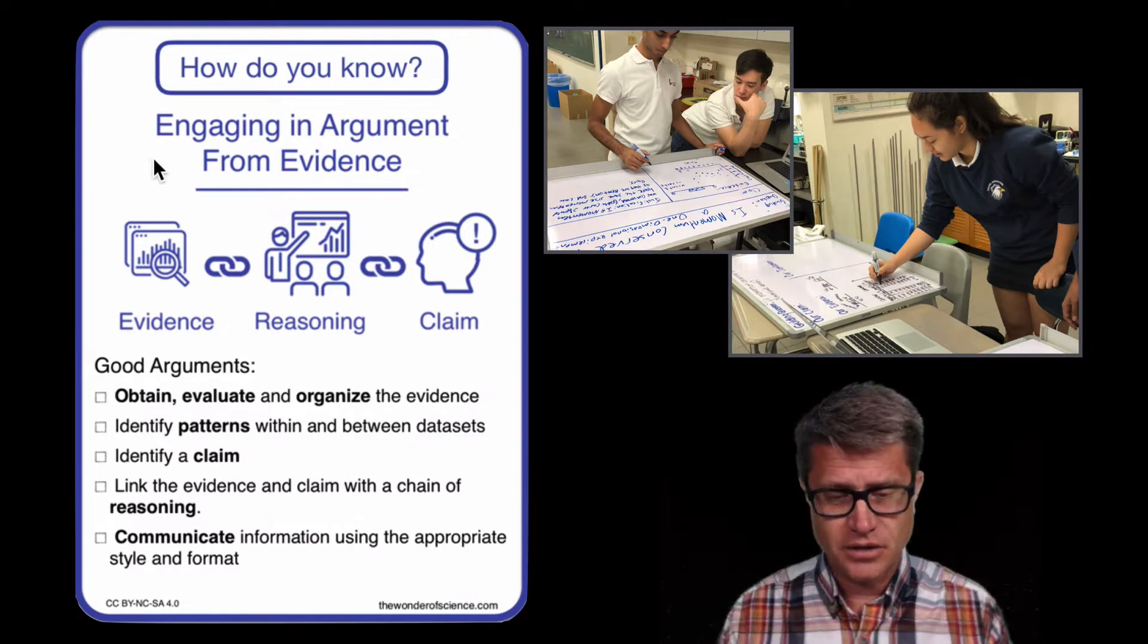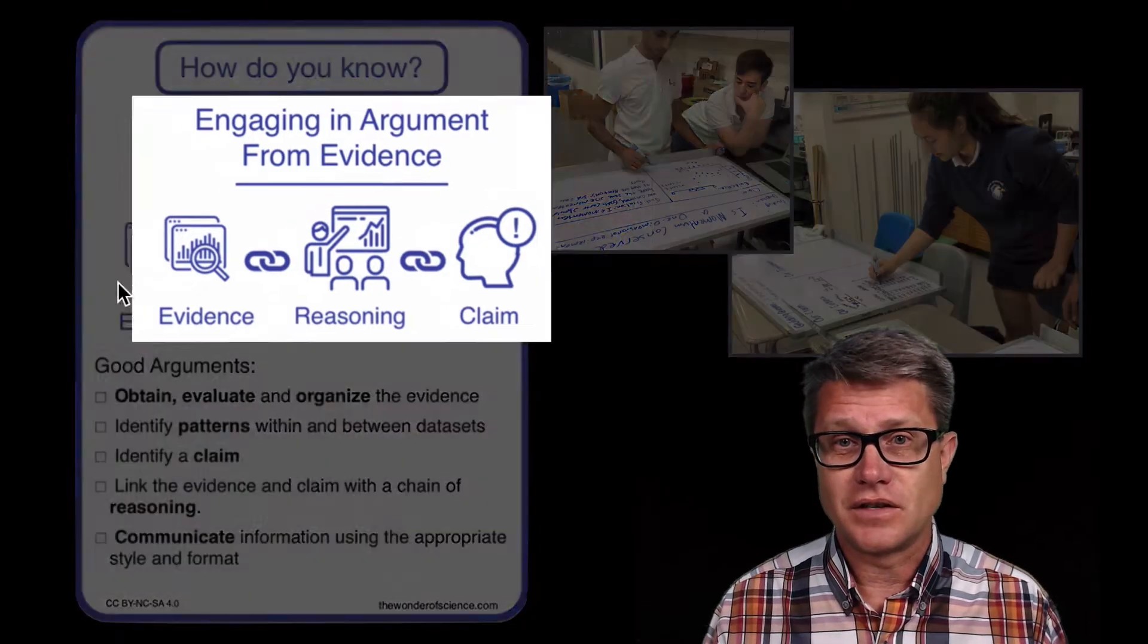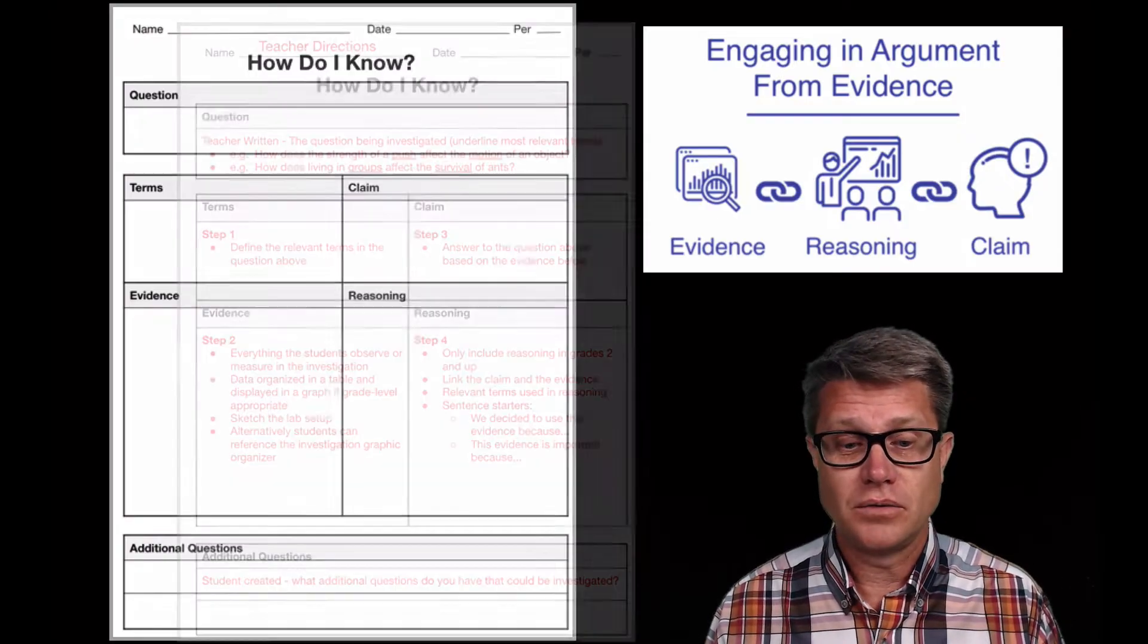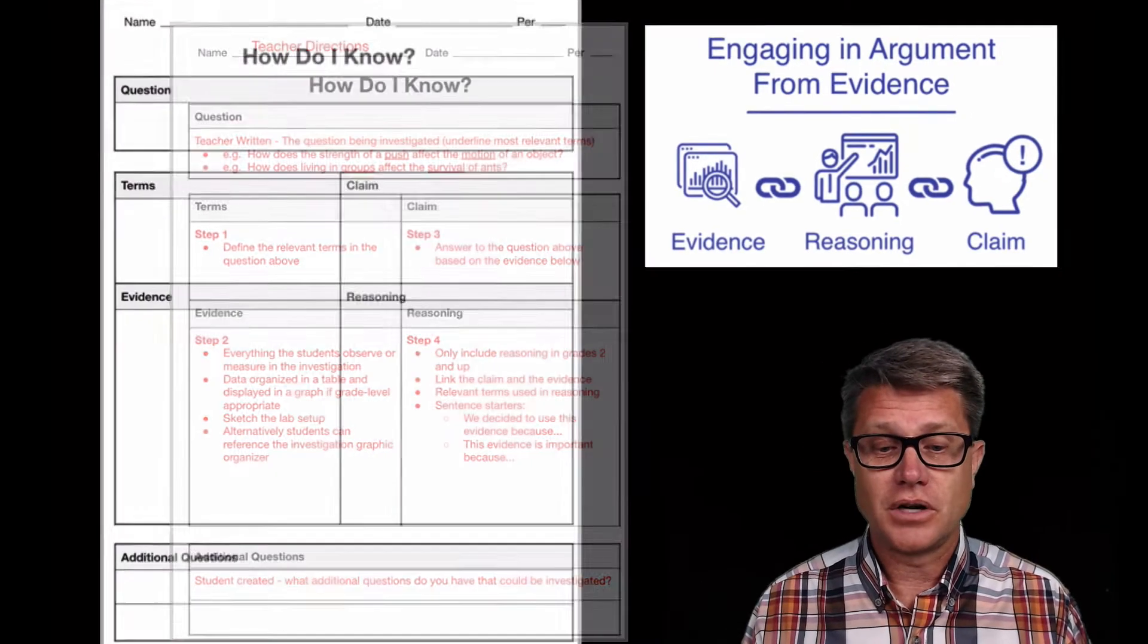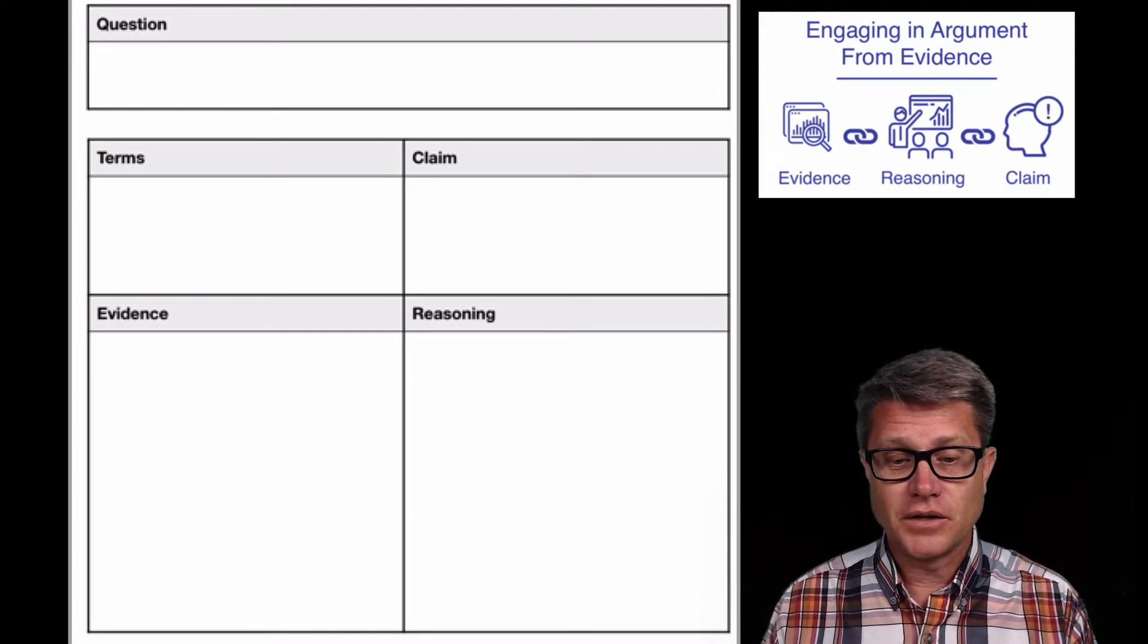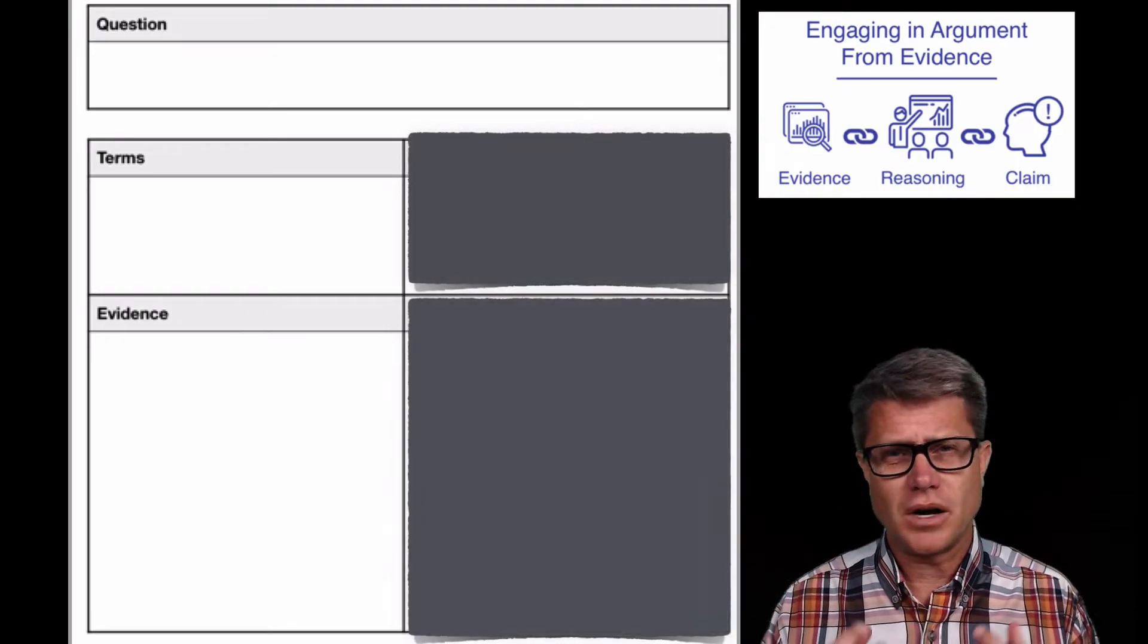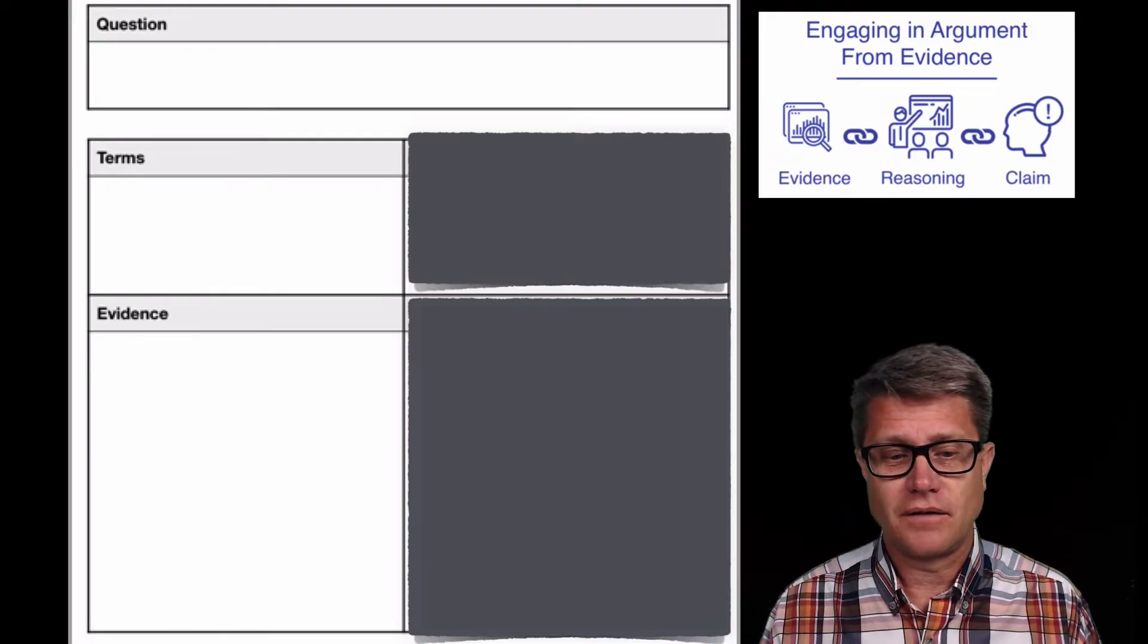And then that reasoning is simply connecting your claim logically to the evidence that you have. This is a graphic organizer that I use when I'm doing argumentation. It's really showing how you know what you know. I've got a teacher version where it shows you things that I would include on that. But if I were going to step through and let's say you're doing argumentation for the first time, the first thing I would do is cover up the claim and the reasoning. I would cover up those two boxes, showing kids what we want to do first is we want to gather that evidence and then see what story that evidence tells.